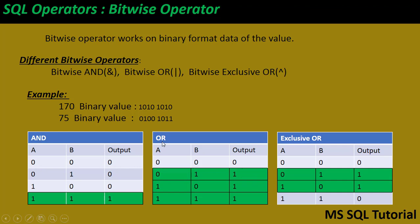The bitwise OR operator performs a logical OR on each bit of two values, which means only one of the two bits needs to be one for the result to be one; otherwise it is zero. As you can see in the table on screen, if at least one bit value is one, the output is one. If both are zero, the output is zero.